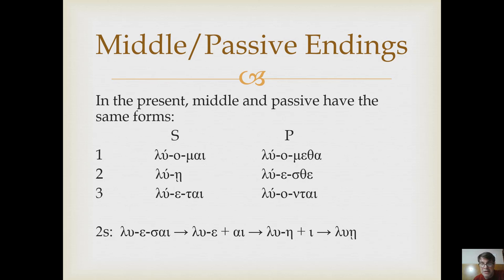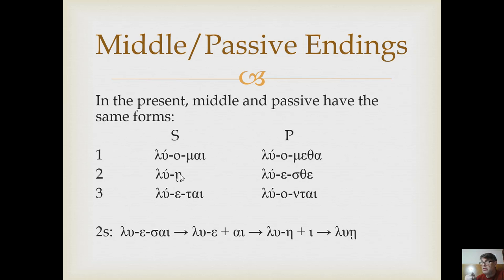For the middle translation, one grammar translates it 'I am loosing in my own interest' if it's middle. You could also translate it 'I am loosing myself' or 'you are loosing yourself.' What the middle means: first, look in the dictionary for a special meaning; second, it could be deponent; if it's a genuine middle, you have to find the nuance — is it 'I loose myself,' 'I am loosing in my own interest,' 'I myself loose,' 'we are loosing one another,' or 'I am having myself loosed'? That's advanced — beyond beginning Greek, so don't worry if you don't have that down.